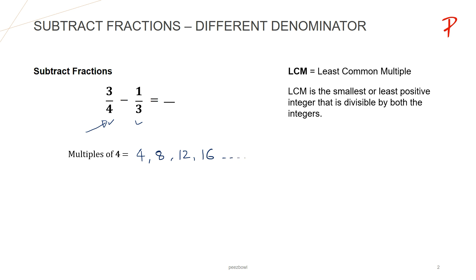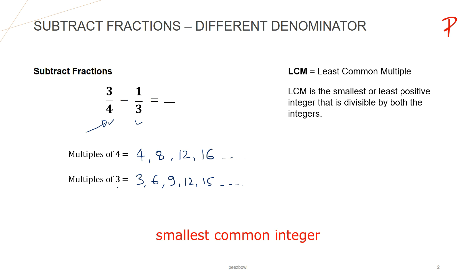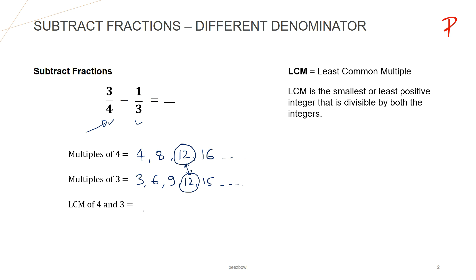And our next step will be to write multiples of 3, that is going to be 3, 6, 9, 12, 15, and so on. From these two sets of multiples — multiples of 4 and multiples of 3 — we need to find the common integer in both. In multiples of 4 we have 12, and in multiples of 3 we also have 12. So 12 is common in both, and the LCM of 4 and 3 will be 12.